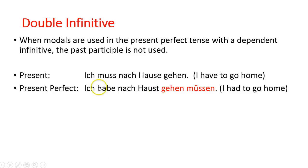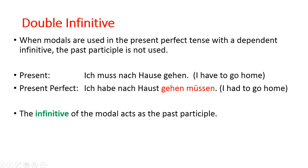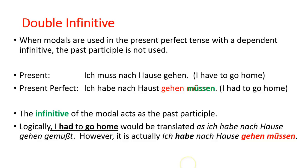Habe is our auxiliary. We don't have to worry about using sein at all. This is where the double infinitive comes into play — two infinitives. We have our main or dependent infinitive, and now we have the modal in its infinitive form. So that muss goes back to its infinitive form — not as a past participle. The infinitive is not the past participle, but it's acting like the past participle; it's not in that ge- form. Logically one might expect gemusst, but that does not occur. It's gehen müssen: ich habe nach Hause gehen müssen.